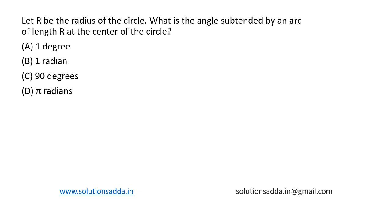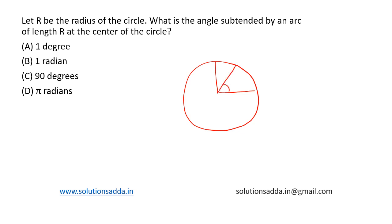Let's draw a circle to understand this. This is a circle of unit radius. One radian is this — this side is one, this side is also one, and this arc portion is also one. So one radian is the angle subtended at the center of a circle by an arc equal in length to the radius of the circle.